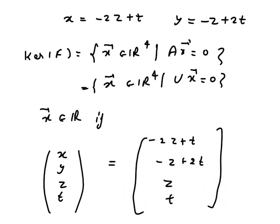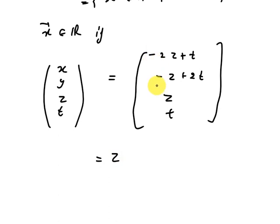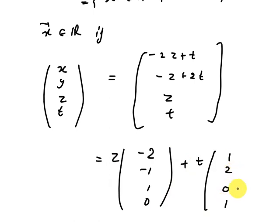Then here we get, it can be written as Z, take Z common here. Then write the elements of Z, that is minus 2, minus 1, 1, 0, plus T. Here we get 1, 2, 0, 1.